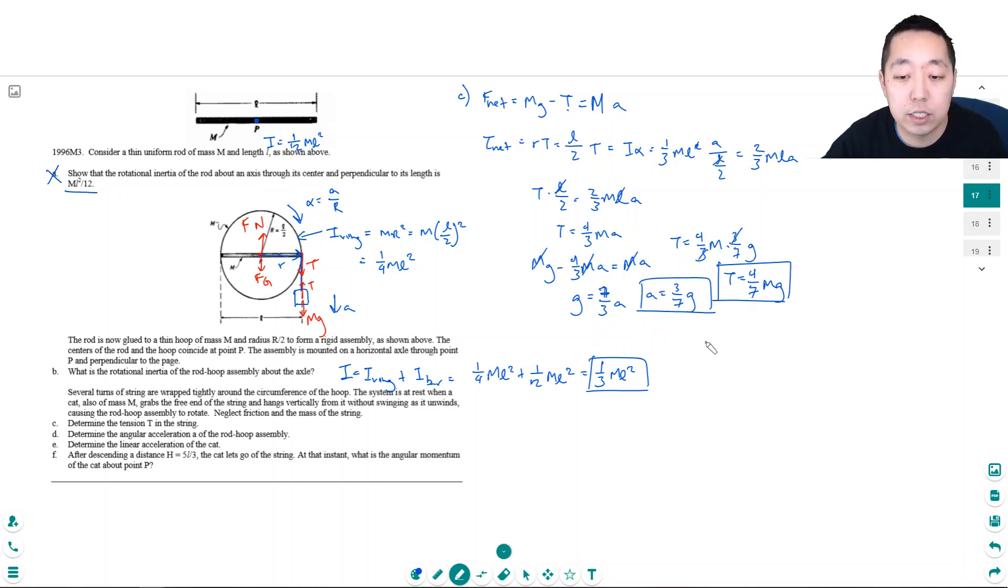And then the angular acceleration is what they're asking us, because they ask us to find tension, angular acceleration, linear acceleration. Alpha, which we said was A over R or L over 2. This is equal to 3/7 G divided by 1/2 L. And if I, it becomes 3/7 times 2 times G over L. That's 6/7. So alpha would be 6/7 G over L. So doing this setup basically helps me find C, D, and E simultaneously.